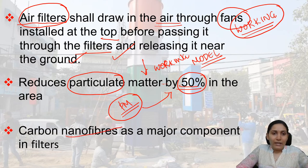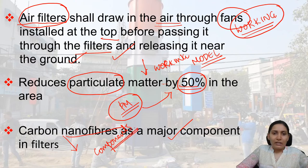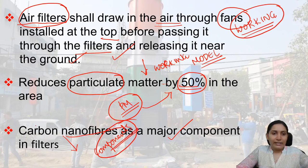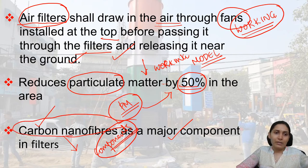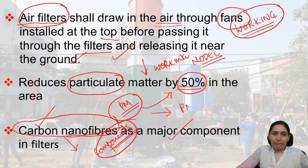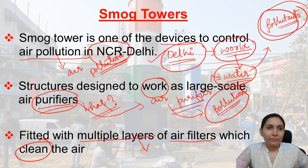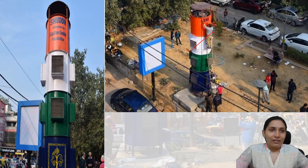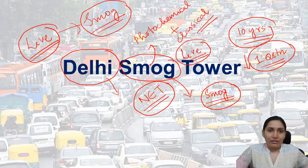Carbon nanofibers are a major component in the filters. Please remember this — carbon nanofibers are the most important component which helps in reducing the particulate matter by up to 50 percentage. This covers the key details about Delhi's smog towers.